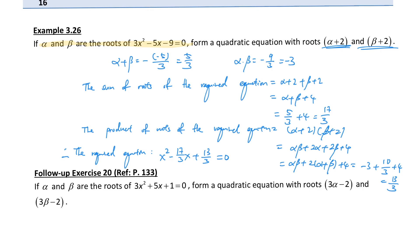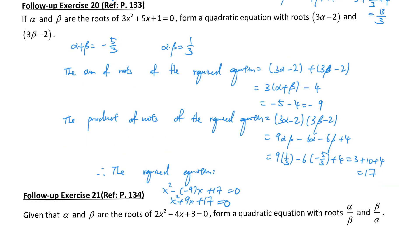Pause the video and do the next example by yourself, then check the answer after you finish. Alpha plus beta is equal to negative 5 over 3. Alpha times beta is equal to 1 over 3. The sum of roots of the quadratic equation: adding them together, we can take out 3 times (alpha plus beta) minus 4, which gives negative 5 over 3 times 3 equals negative 5, and negative 5 minus 4 equals negative 9. Same idea for the product of roots — simplifying gives 17. The required equation: x squared minus (sum of roots) times x plus (product of roots), which simplifies to x squared plus 9x plus 17.